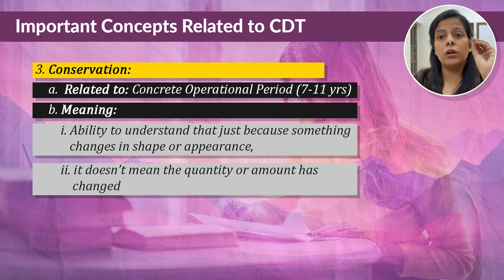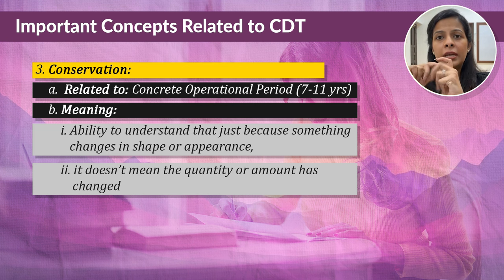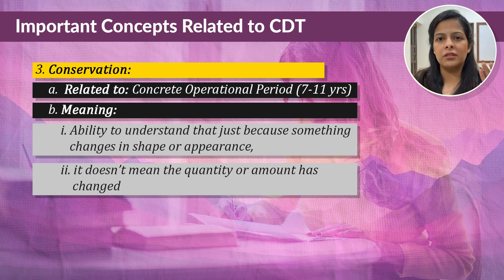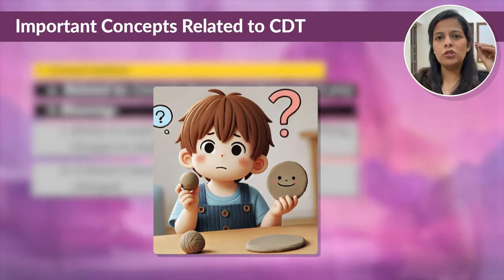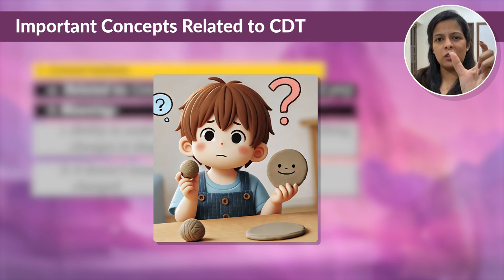The third important concept is conservation. This develops in the Concrete Operational stage, between ages 7 and 11. Conservation is the ability to understand that just because something changes in shape or appearance, it doesn't mean the quantity or amount has changed. For example, if you take two pieces of clay and roll one into a ball and flatten the other like a pancake, a child who hasn't grasped conservation might say the flattened piece is bigger because it looks larger. But a child who understands conservation will know that both pieces of clay are the same size, even though they look different.